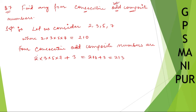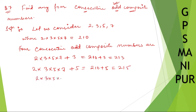The next number is two into three into five into seven plus five, which is two hundred ten plus five, giving two hundred fifteen. We skip six because two hundred sixteen is even, so we go to the next odd addition.